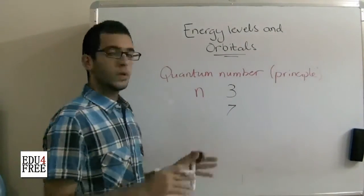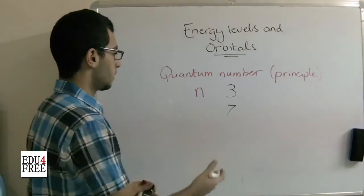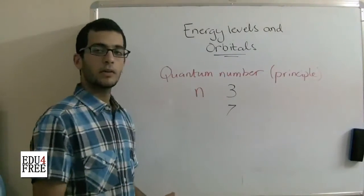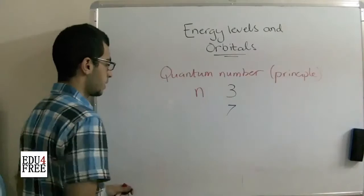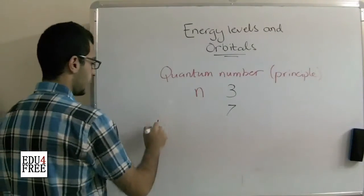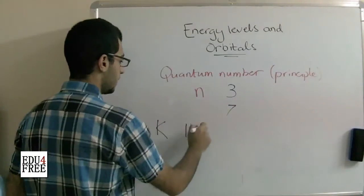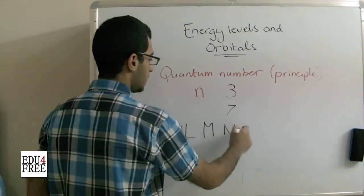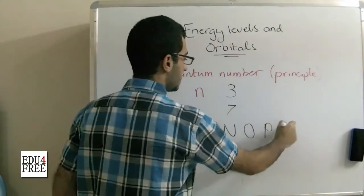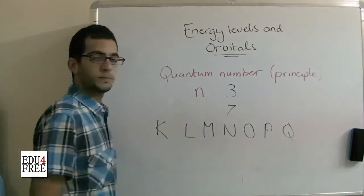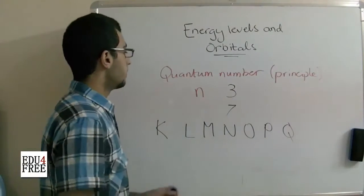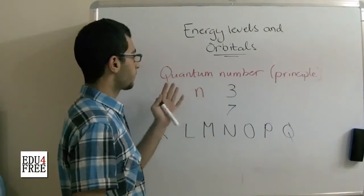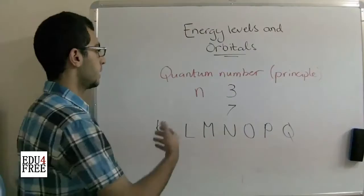A new thing is that we refer to the main energy levels which are 7 in the atom by letters. So we begin with K, we have K, L, M, N, O, P and Q. So this is the principal quantum number and the energy level.